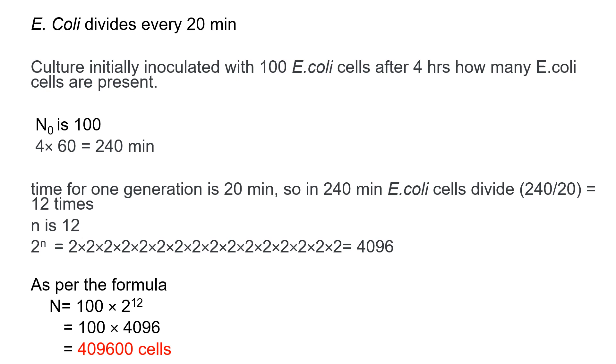Let's understand with an example. E. coli divides every 20 minutes. Culture is initially inoculated with 100 E. coli cells. After 4 hours, how many E. coli cells are present? As per the formula, initial cell concentration N0 is 100. Time given is 4 hours. Convert it into minutes: 4 into 60 equals 240 minutes. Time for concentration of E. coli is 20 minutes.